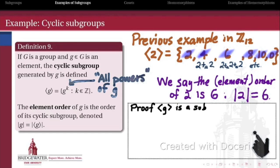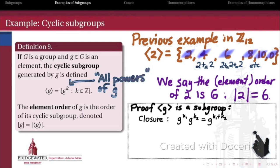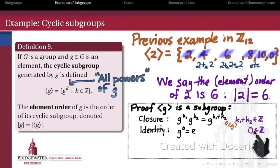Here's a quick proof that the cyclic subgroup generated by an element indeed satisfies the subgroup properties. For closure: if we take two elements with powers k1 and k2 and multiply them, by properties of exponents we get g^(k1+k2). Since k1+k2 is still an integer and the cyclic subgroup consists of all integer powers of g, this element belongs to the cyclic subgroup. For identity: the identity is just g^0, and since 0 is an integer, the identity belongs to the cyclic subgroup.